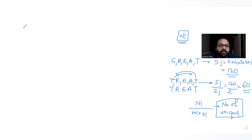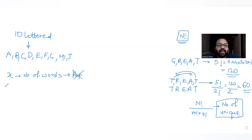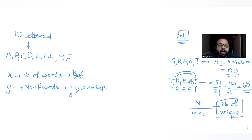Now the question: I have to form 10-lettered words using the letters a to j — that is a, b, c, d, e, f, g, h, i, j — 10 letter options. X is the number of words formed using all the letters without repetition. Y is the number of words formed where two letters are repeated and all other eight letters are not repeated. We have to find X + Y.